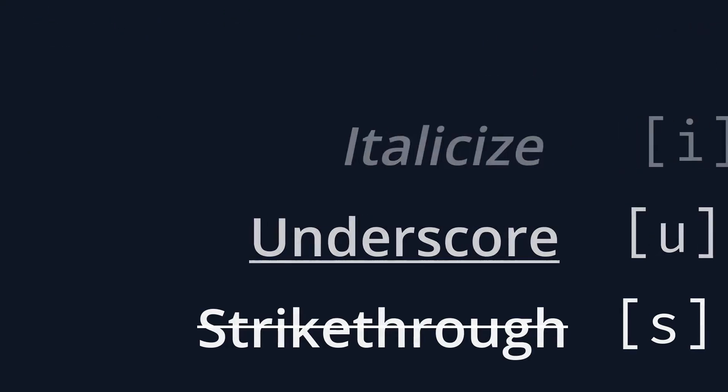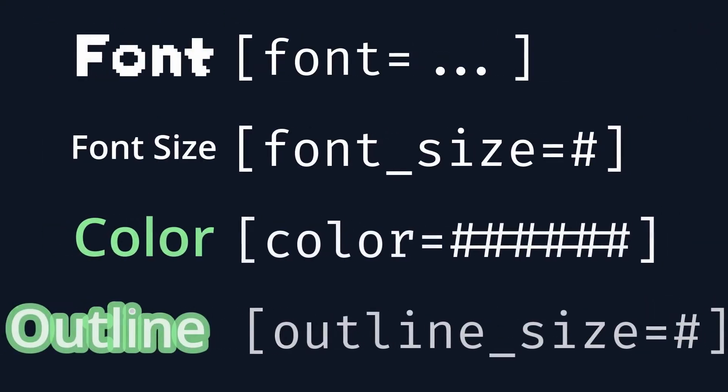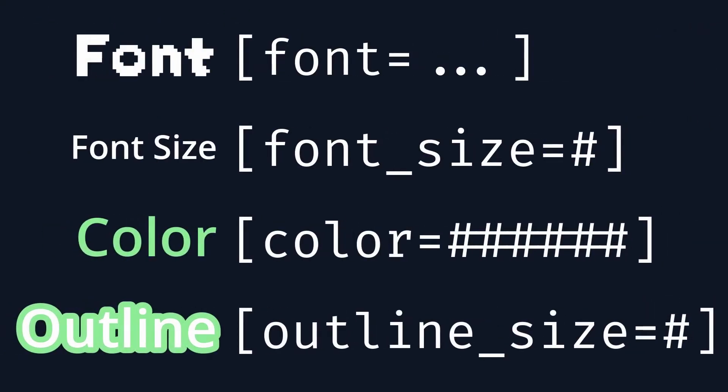These are the effects that let you change stuff about the font the text is using. For changing the font, you have to specify a path to a font resource. And for all the other ones, you have to input a number. For the color modifier, that's going to be the hex code of the color you want to use. These are useful, but kinda boring.